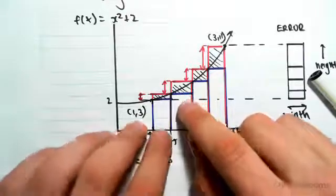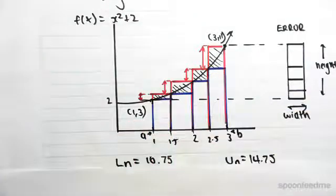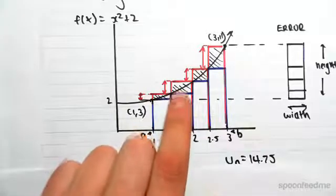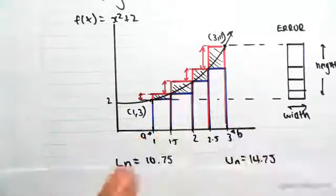Sorry, between the upper and lower rectangles, okay? Now, obviously, there's an error between upper and lower rectangles. That error is that area I've just drawn in there.